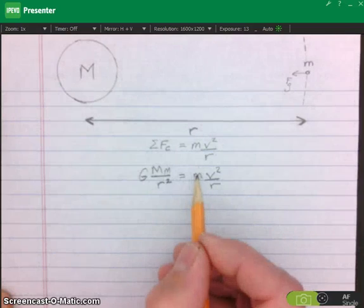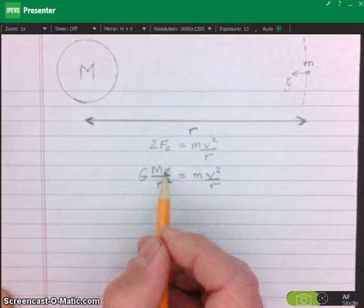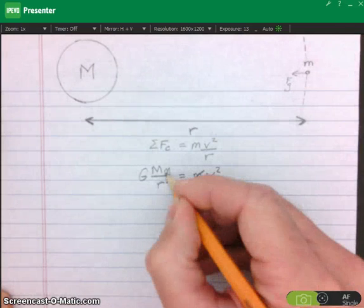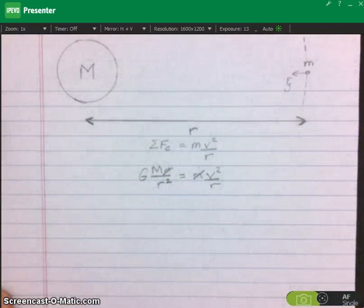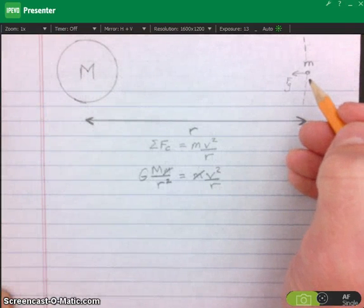You can already see I've got the mass of the small object here and the mass of the small object there. Divide both sides by that m and they're gone. That means that the mass of the small object does not affect the orbit.